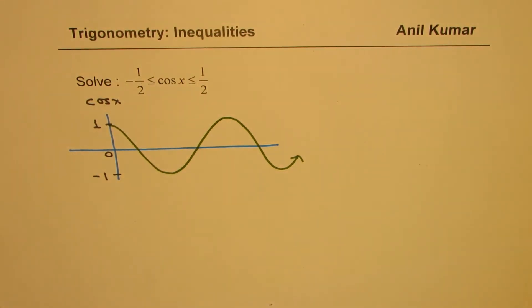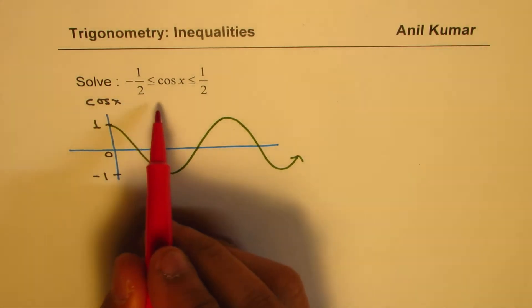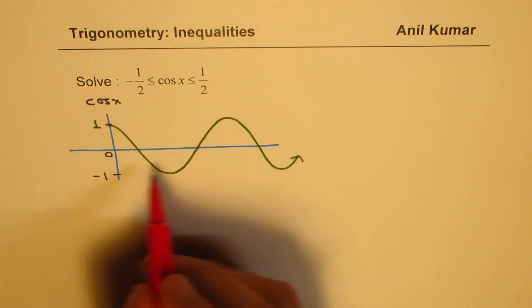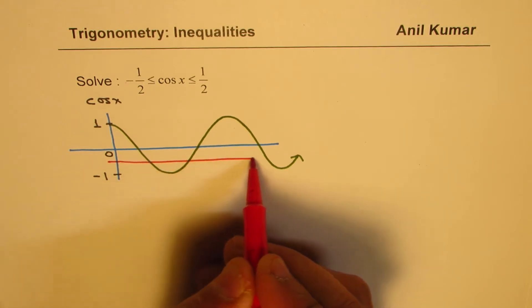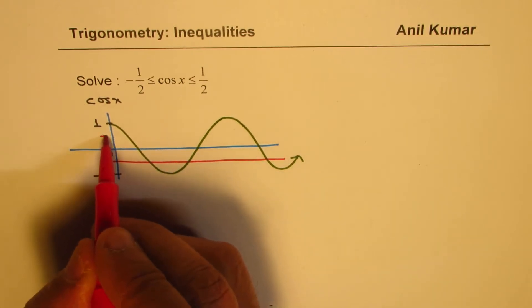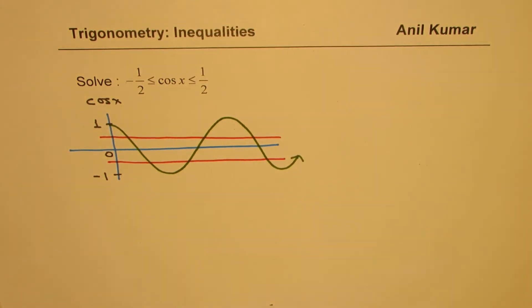Now, when we say that the cos function should be minus half and plus half, it means minus half will be somewhere here. Let me draw a line here. And positive half will be somewhere there. So we have one wave here, complete wave, slightly more than that I have drawn.